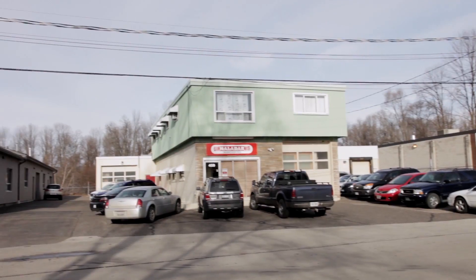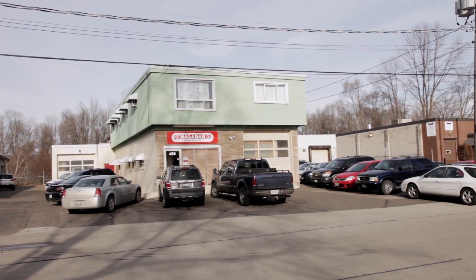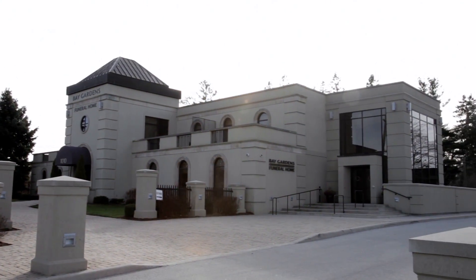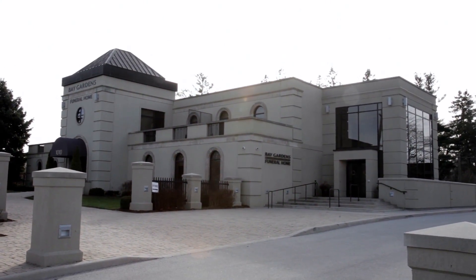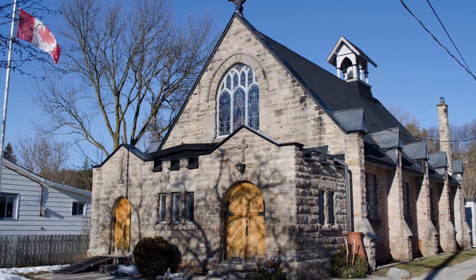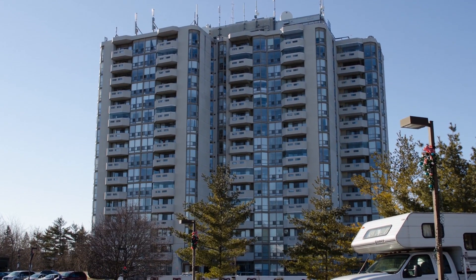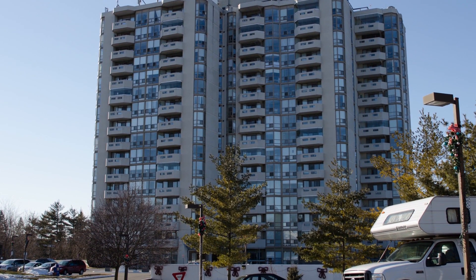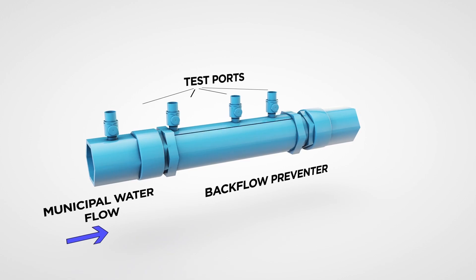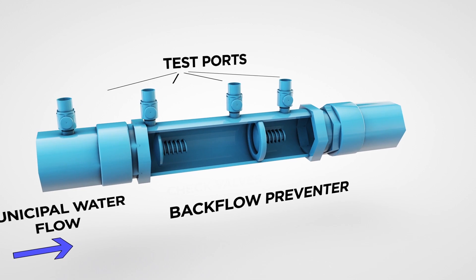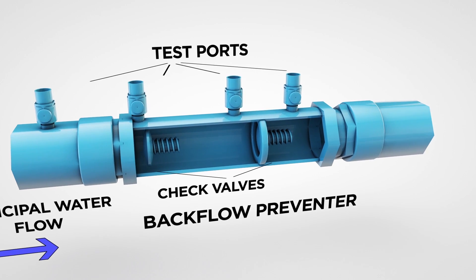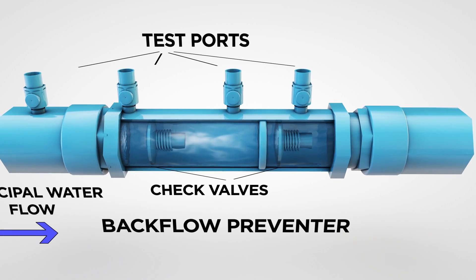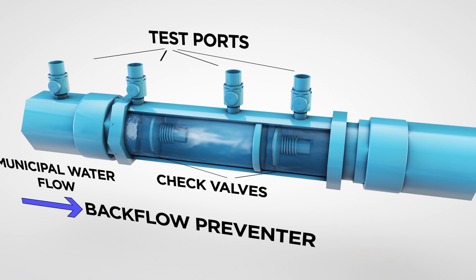One of the most important ways private locations in the industrial, commercial and institutional sector and multi-residential properties can help safeguard the water system is by installing a backflow prevention device to ensure the water system is protected from the backflow of contaminants or pollutants.